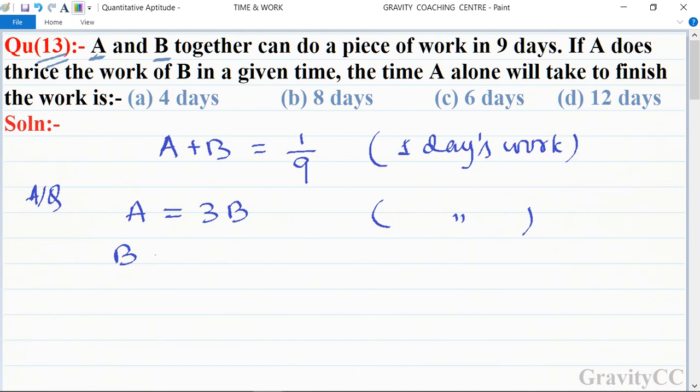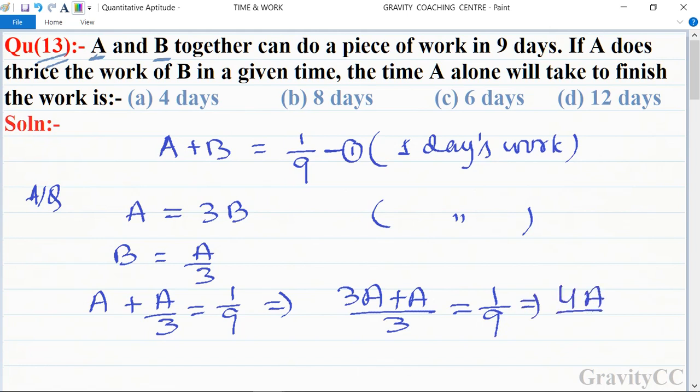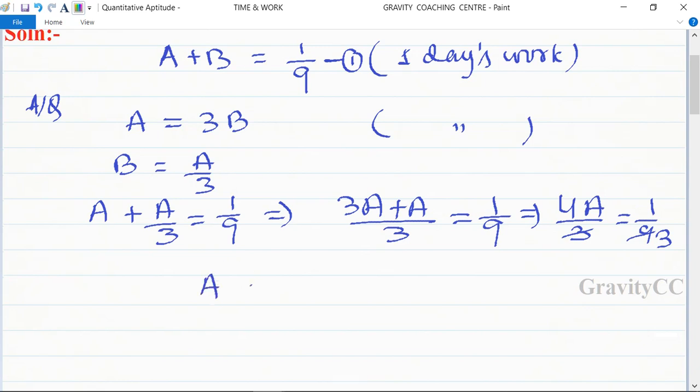So B is equal to A upon three. Now we will take the first equation and put B's value in it. So A plus A upon three is equal to one upon nine. Therefore, four A upon three is equal to one upon nine.